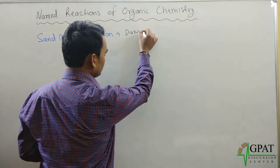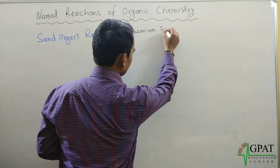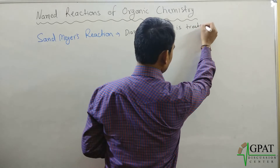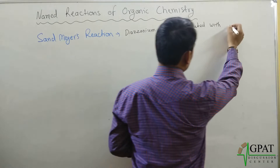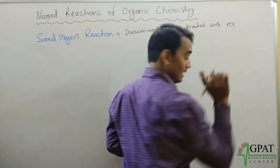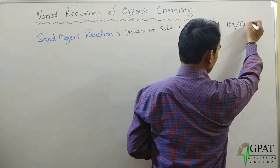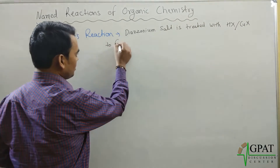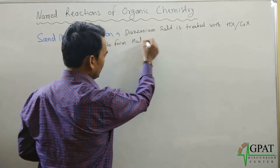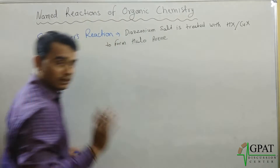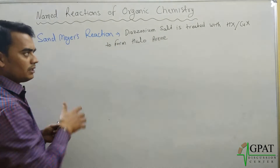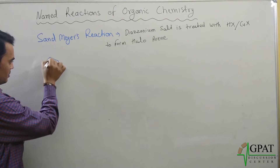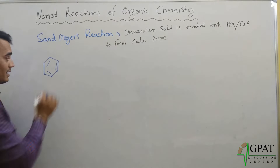What is Sandmeyer's reaction? In Sandmeyer's reaction, a diazonium salt is treated with hydrogen halide in the presence of copper halide to form a haloarene. Simply, a diazonium salt means a benzene ring which has a diazonium group with a positive charge.